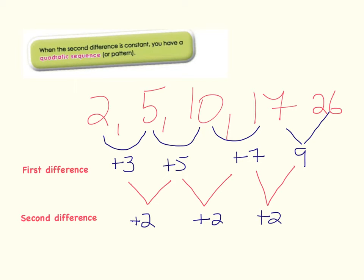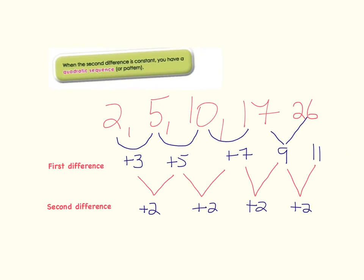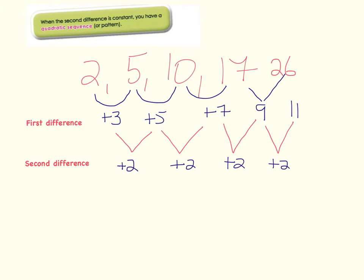We continue on. The difference between 9 and the next first difference has to increase by plus 2 again, giving 11. So the next number in the sequence will be 26 plus 11, which gives us 37.